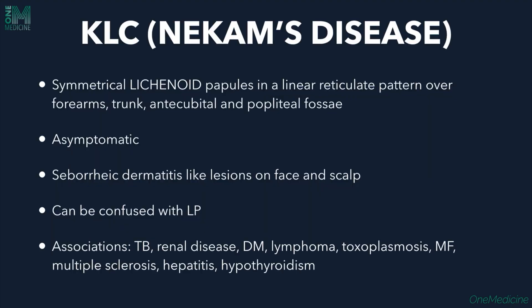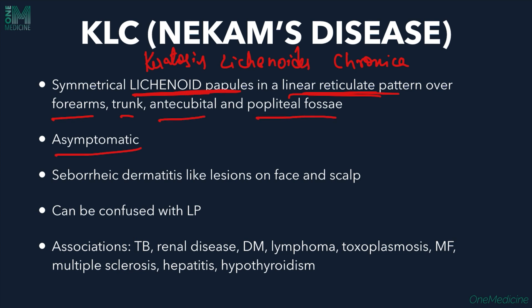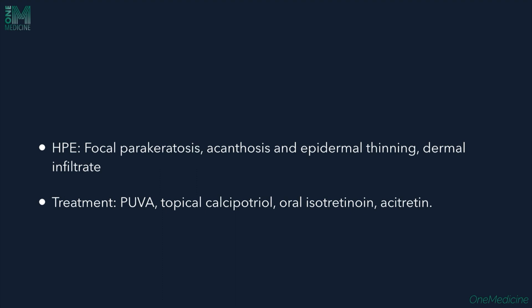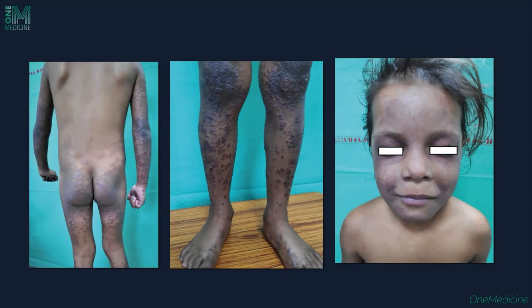KLC, or keratosis lichenoides chronica (Nicam's disease), presents with symmetrical lichenoid papules in a linear reticulate pattern over the forearm, trunk, antecubital and popliteal fossa. They are asymptomatic; seborrheic dermatitis-like lesions can be seen on the face and scalp. They are often confused with lichen planus. Associations include TB, renal disease, diabetes mellitus, lymphoma, hypothyroidism, and hepatitis. Histopathology shows focal parakeratosis, acanthosis, epidermal thinning, and dermal infiltrate. Treatment is with PUVA, topical calcipotriol, and oral acitretin.